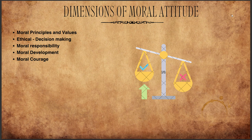Now the dimensions of moral attitude. First, moral principles and values — moral attitudes are grounded in fundamental principles such as fairness, justice, honesty, and compassion, which help determine what is right and wrong. For example, a civil servant with a strong moral attitude may prioritize fairness and advocate for equal treatment for all persons.